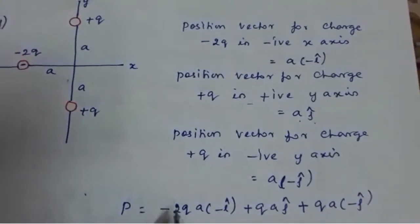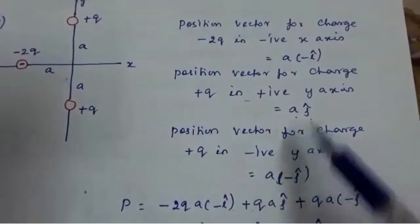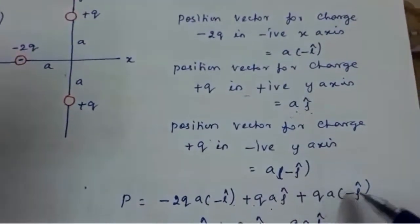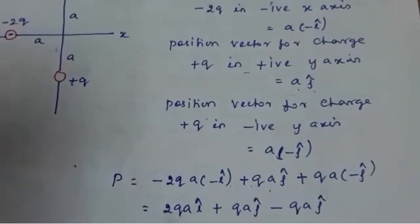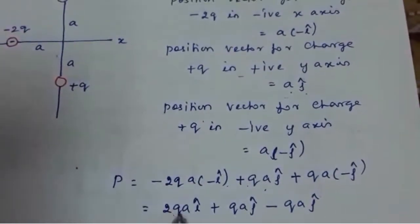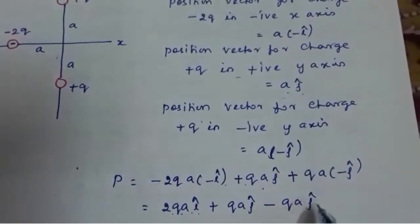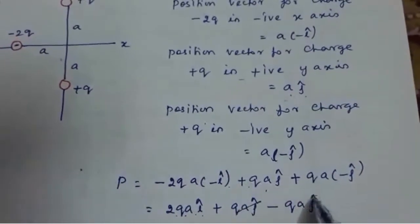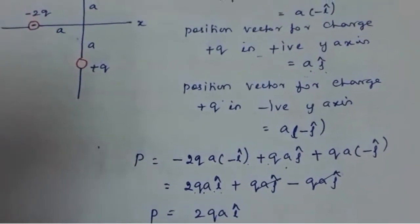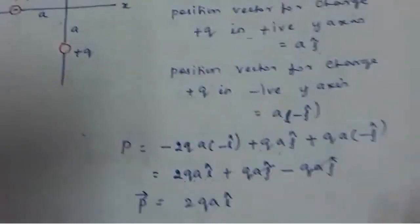Writing the dipole moment: P = (-2q)(a)(-î) + q(aĵ) + q(a)(-ĵ). The first term: minus times minus gives +2qaî. The second and third terms, +qaĵ and -qaĵ, cancel each other. So the net dipole moment is 2qaî.